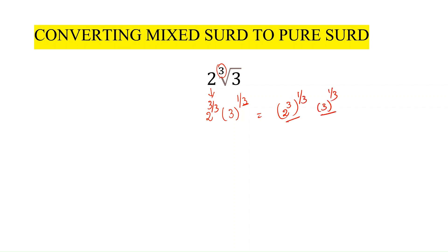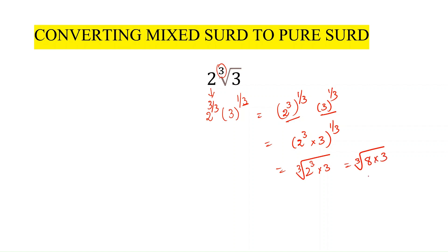Now we have 1 by 3 as the exponent for both terms, so we take 1 by 3 in common. It becomes 2 cubed times 3, all to the power 1 by 3, which is the cube root of (2 cubed times 3). Since 2 cubed is 8, this is the cube root of 24. This is how we convert a mixed surd into a pure surd — it is pure because there is no coefficient before the irrational part.